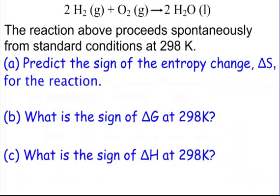Let me give an example of a problem that you would see for this. We have two moles of hydrogen gas plus one mole of oxygen gas, giving us two moles of liquid water. We're producing liquid water. And, of course, this reaction, it says it proceeds spontaneously. We get water all the time as a liquid. And it's at standard conditions at 298 Kelvin. And the first thing they ask us in A is predict the sign of the entropy change, the delta S for the reaction. Now take a look at your reaction. Are we going towards more disorder or less disorder?